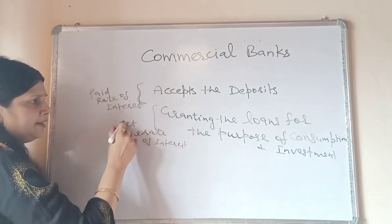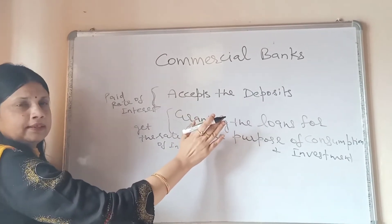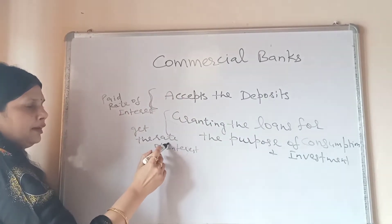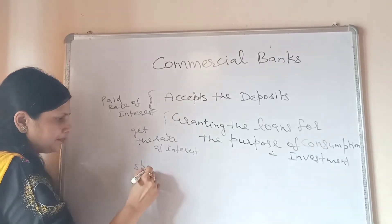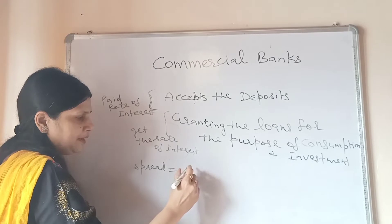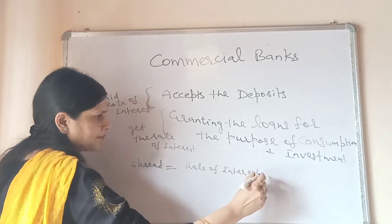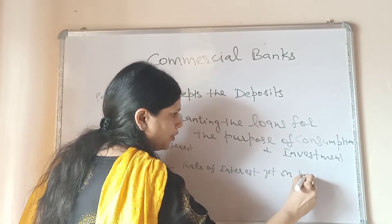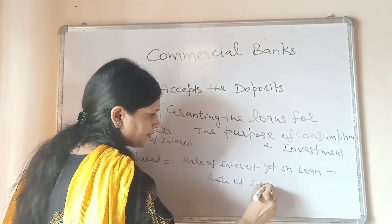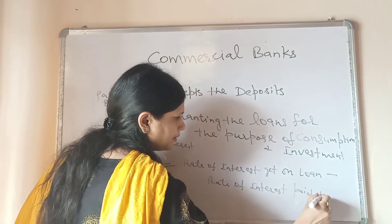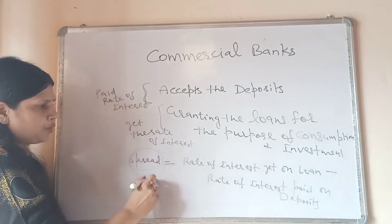The rate of interest granted on a loan is always higher than the rate of interest paid on deposits. The difference between the rate of interest received on loans and the rate of interest paid on deposits is known as the spread. This spread is the source of profit for the commercial bank.